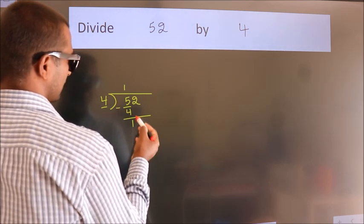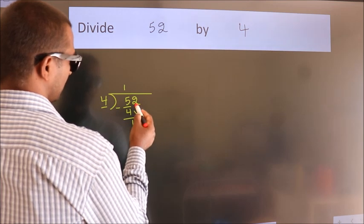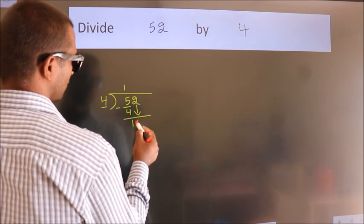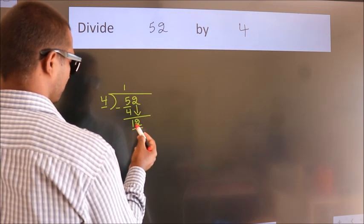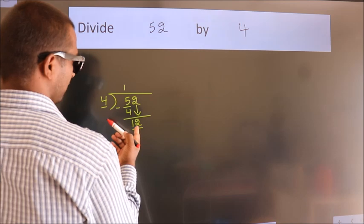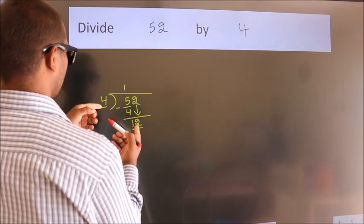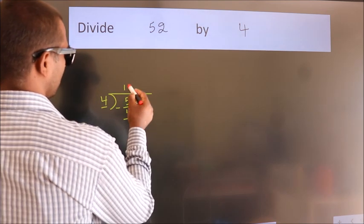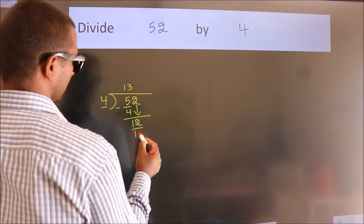After this, bring down the beside number. So 2 down, so 12. When do we get 12 in the 4 table? 4 times 3 is 12.